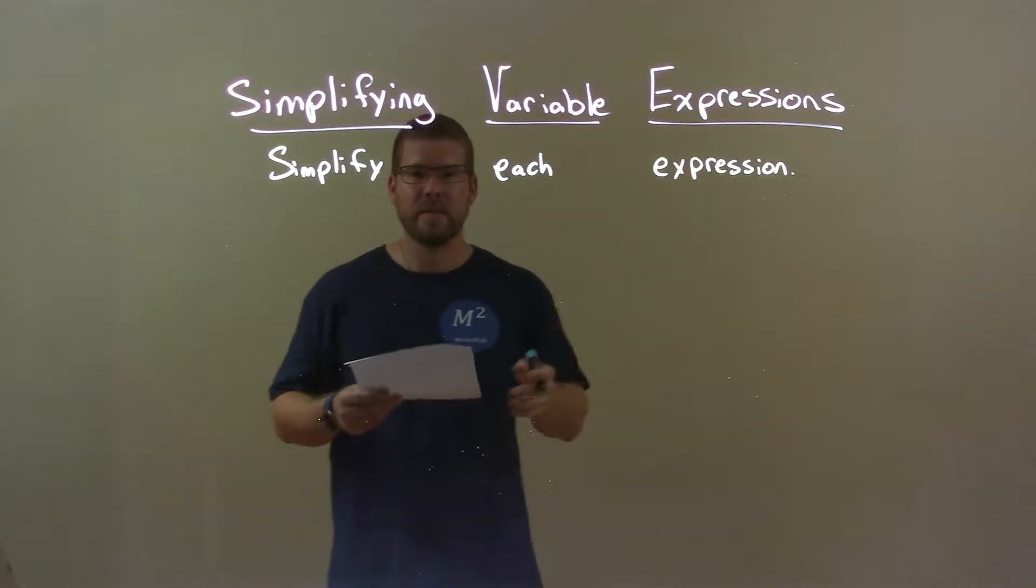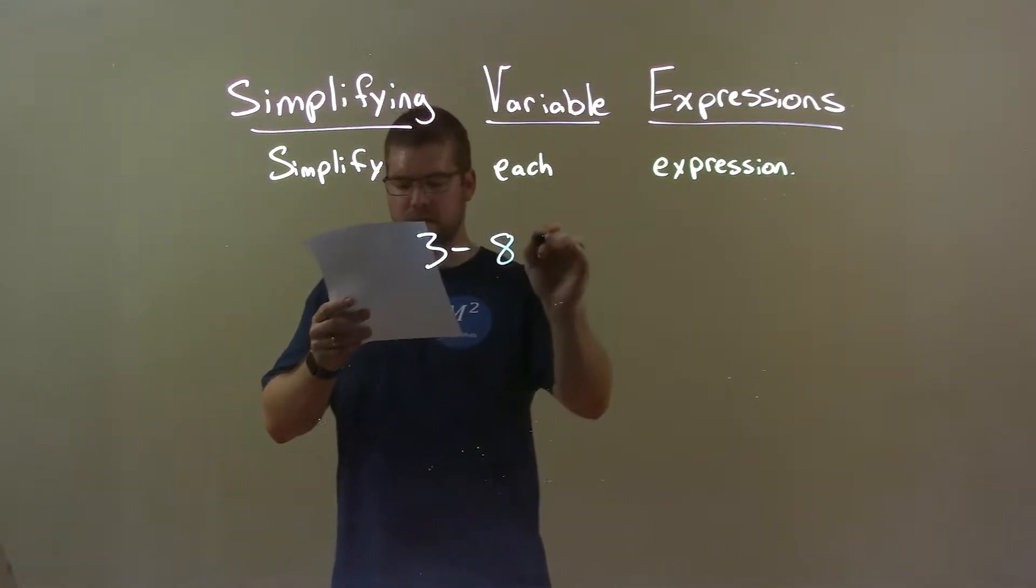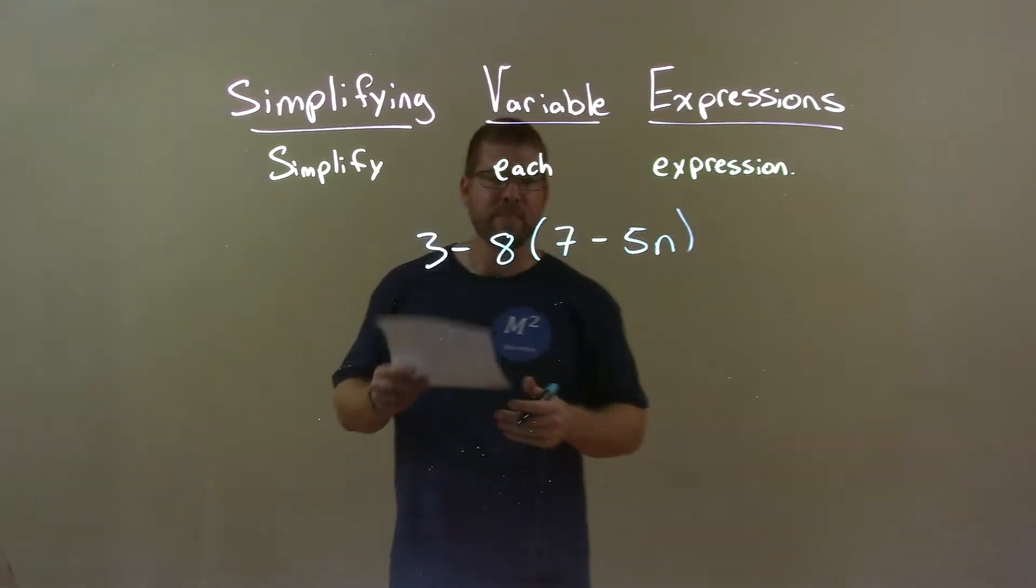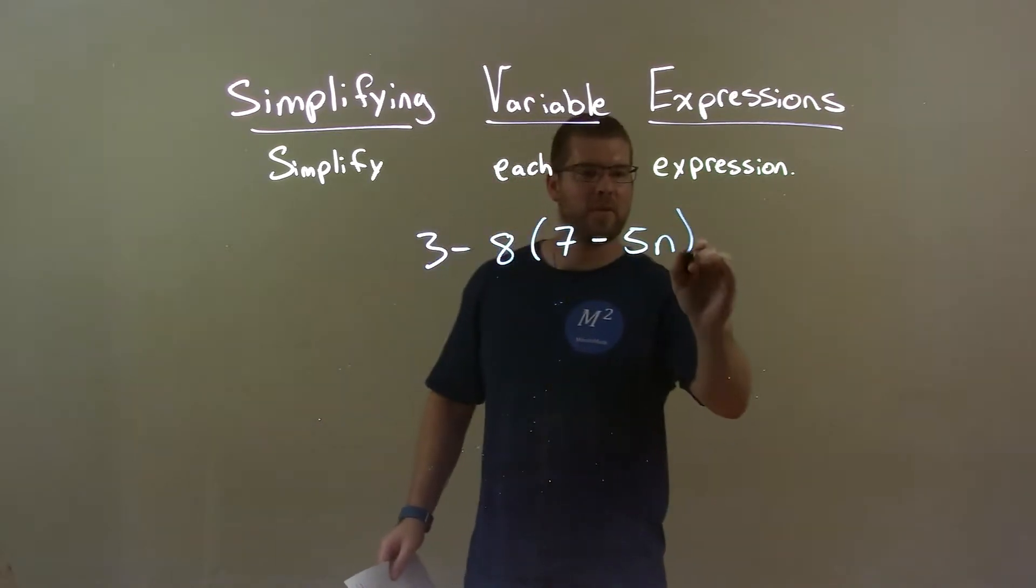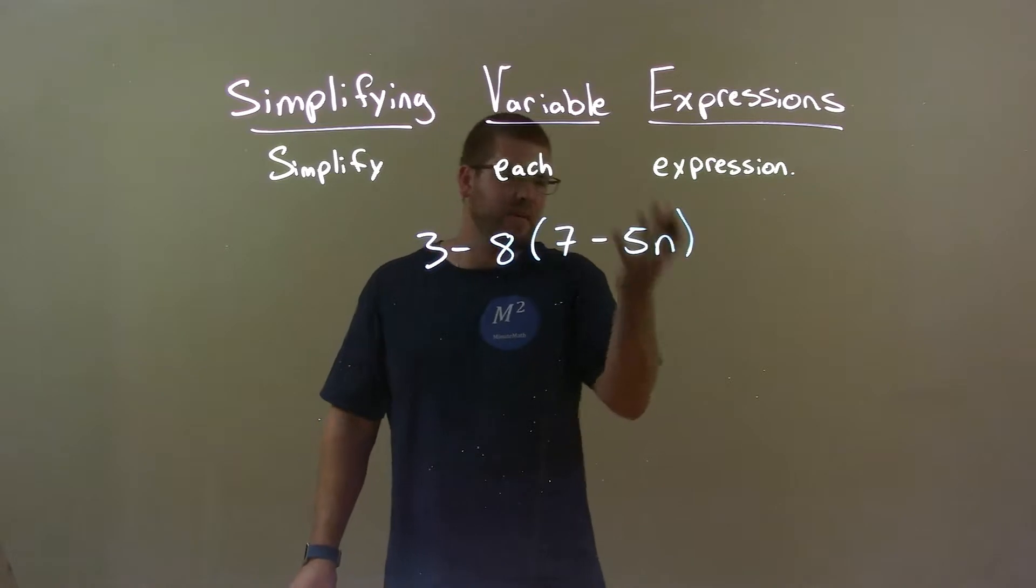So if I was given this expression, 3 minus 8 times 7 minus 5n, okay? Well, I have a little off there, but it's okay. My first step here, I look in the parenthesis, nothing can be combined.